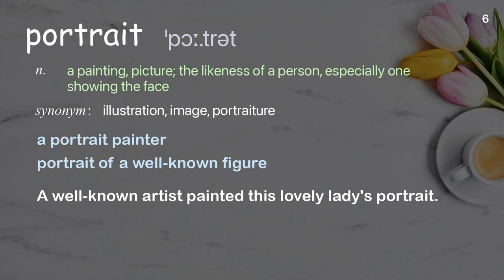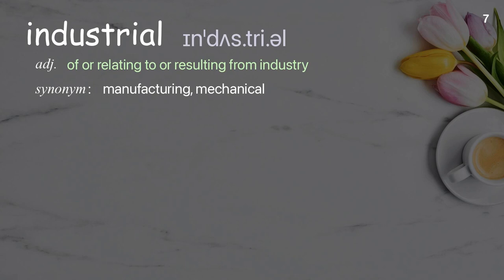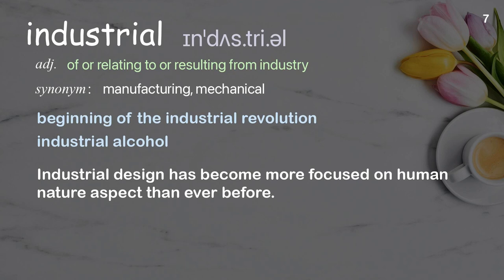Industrial: Of or relating to or resulting from industry. Examples: beginning of the industrial revolution, industrial alcohol. Industrial design has become more focused on the human nature aspect than ever before.